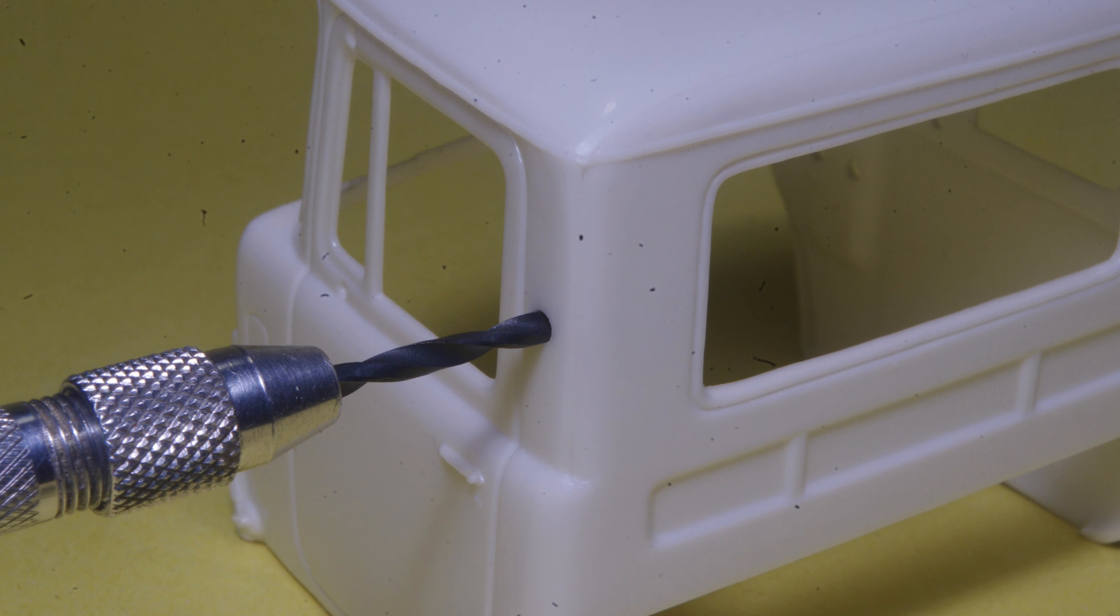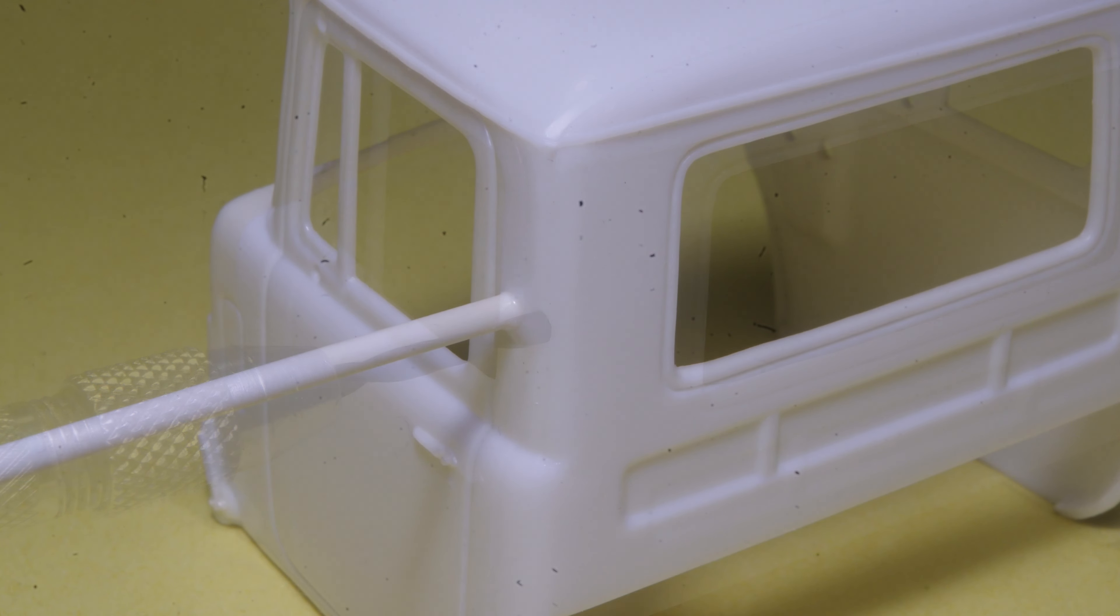The first step is to fill the large holes in the side of the cab. Use a 3/32nds drill to open the holes up, and glue in 100 thousandths diameter styrene rod to plug the hole.